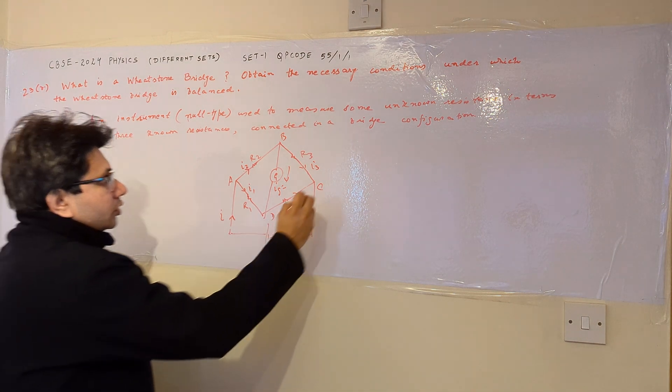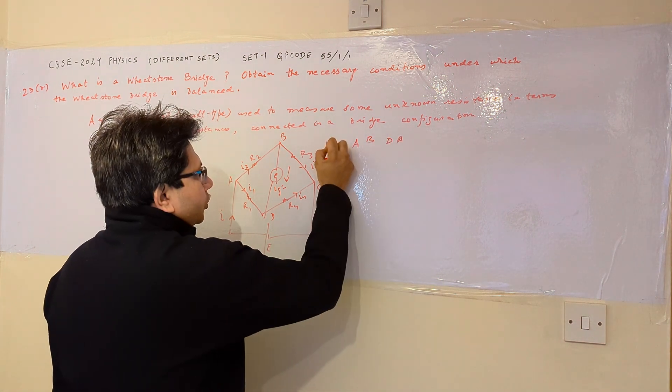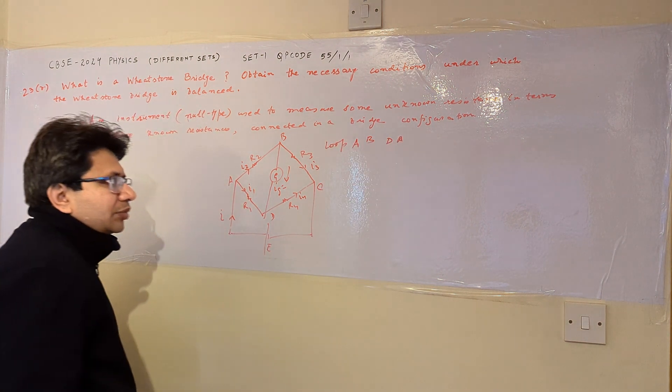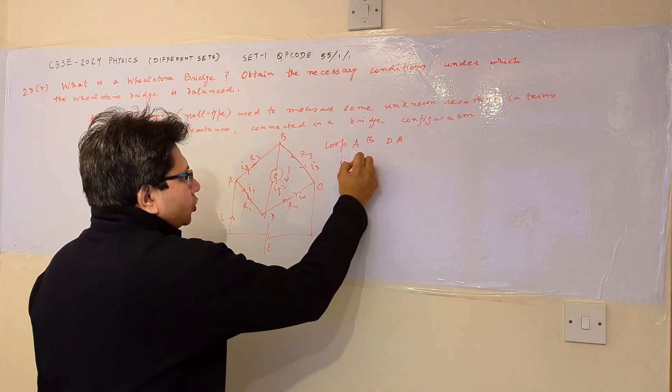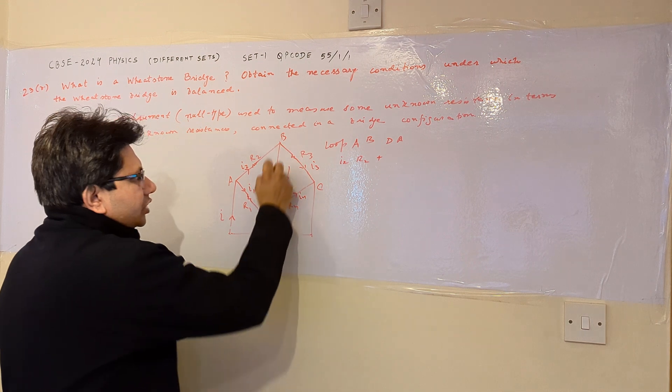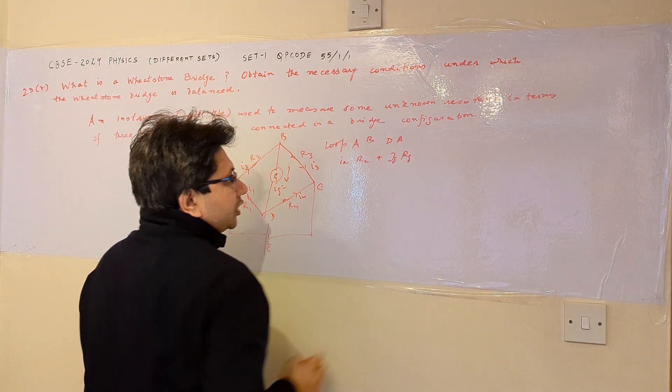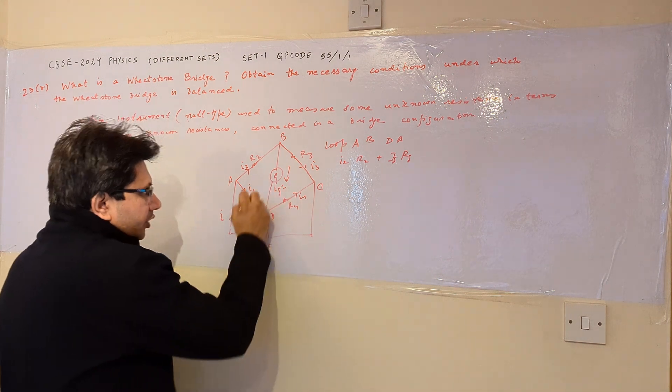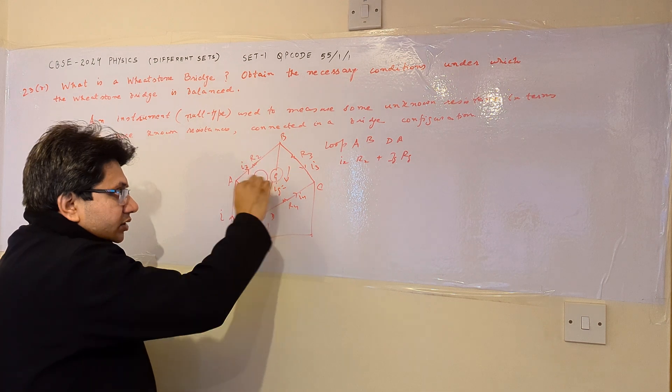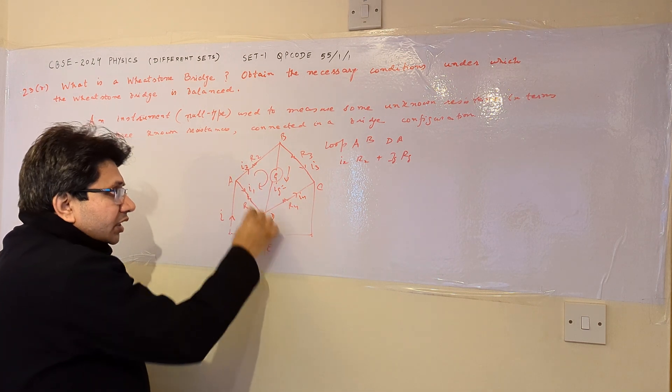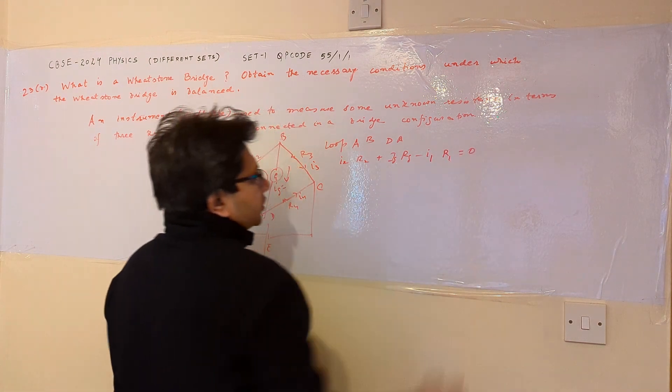Then applying KVL for the loop A, B, D, A. We can apply KVL. So according to this loop, I2 R2 plus ig times the resistance of the galvanometer, then this loop is traversed in this manner. We have taken the reference direction as the clockwise direction, and it is opposing the I1 current. So that is why minus I1 R1 and this is equal to zero.